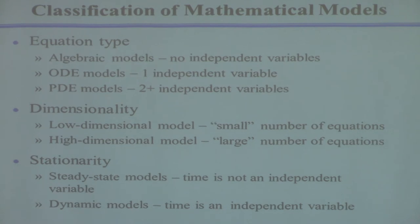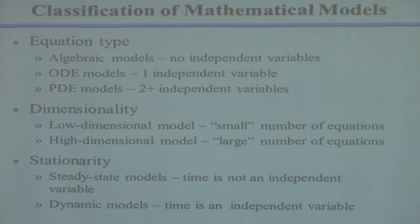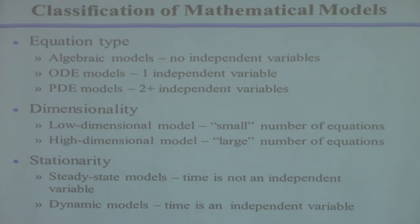An ODE — ordinary differential equation — means it has one independent variable, which could be time or a spatial coordinate. We deal with both algebraic equations and ODEs extensively. A PDE — partial differential equation — has two or more independent variables, such as two spatial coordinates or a spatial coordinate and time. That's a different ball game and is outside the scope of this class.